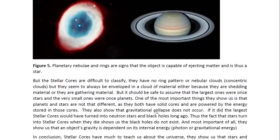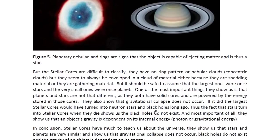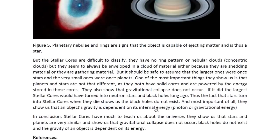The stellar cores are difficult to classify. They have no ring pattern, nebular clouds, or concentric clouds, but they seem to always be enveloped in a cloud of material, either because they are shedding material or gathering material. It should be safe to assume that the largest ones were once stars and the very small ones were once planets. One of the most important things they show us is that planets and stars are not that different, as they both have solid cores and are powered by the energy stored in those cores. They also show that gravitational collapse does not occur — if it did, the largest stellar cores would have turned into neutron stars and black holes long ago. Thus, the fact that stars turn into stellar cores when they die shows us that black holes do not exist.